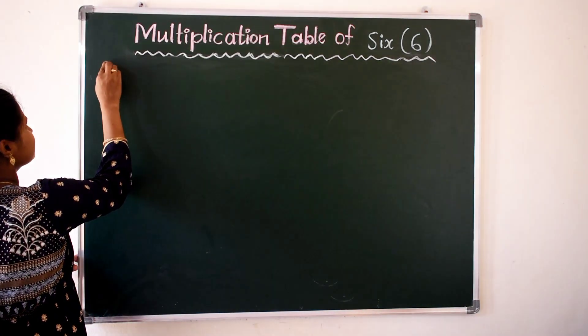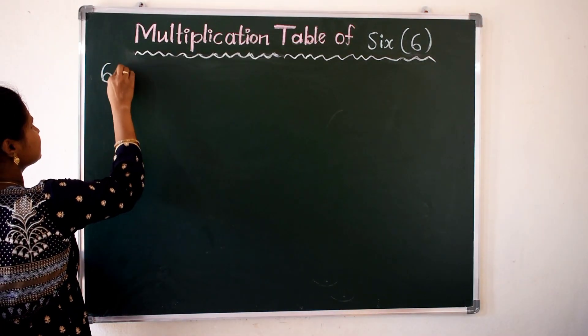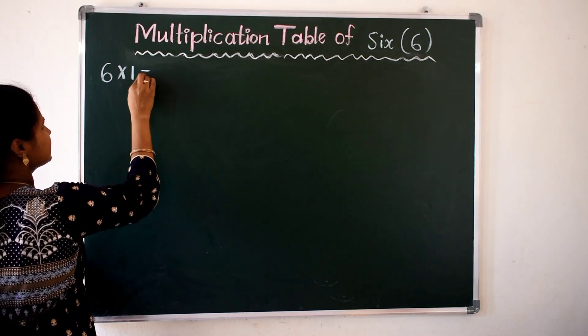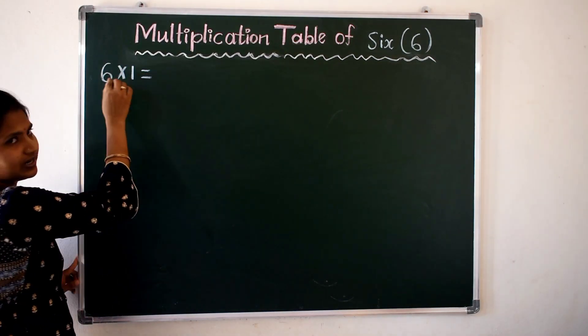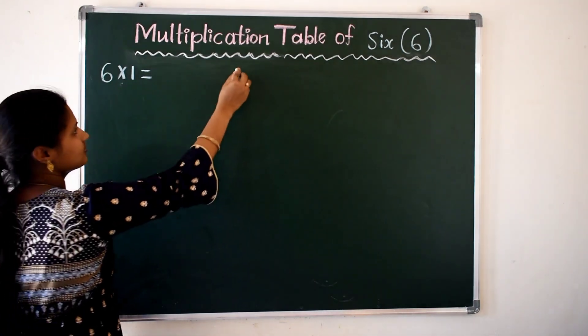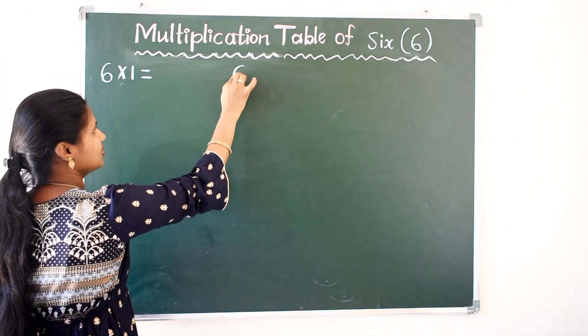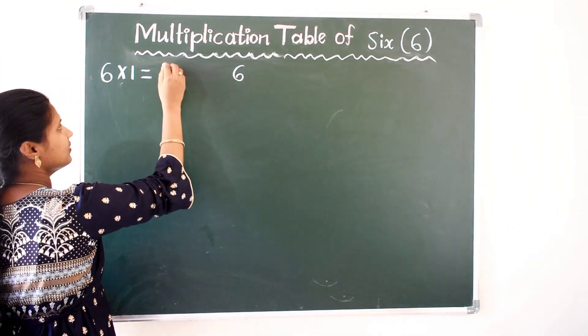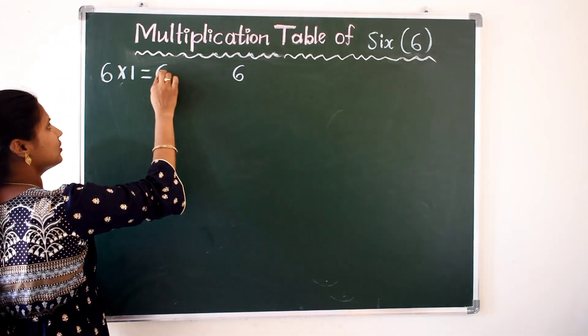6 1s are — 6 one time. So if you write 6 one time, you will write 6 only.